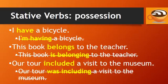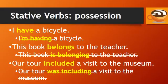Here are some examples of stative verbs with possession. You can say, 'I have a bicycle,' but not, 'I'm having a bicycle.' Say, 'This book belongs to the teacher,' not, 'This book is belonging to the teacher.' Our tour included a visit to the museum, not, 'Our tour was including a visit to the museum.'